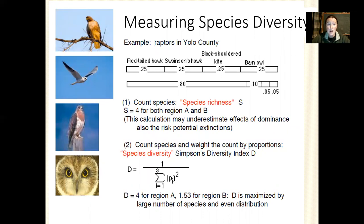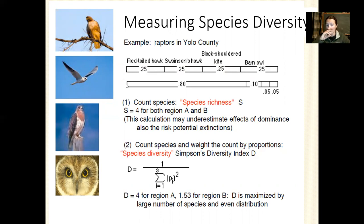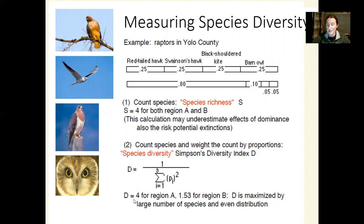Another way of measuring species diversity is the Simpson's diversity index — there are many different ways to measure diversity. Here are two communities, each with four raptors: two hawks, a kite, and an owl. Species richness S is four for both. The Simpson's diversity index also weights relative abundance. The first community is relatively evenly distributed; the second has mostly red-tailed hawks with very few of the others. Region A, which is pretty even, has a higher diversity index because of the even distribution.